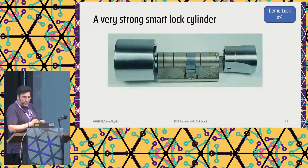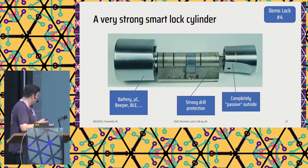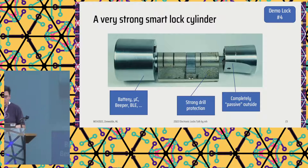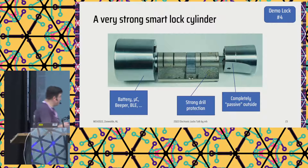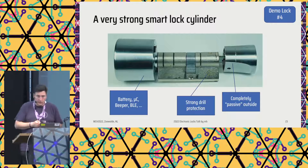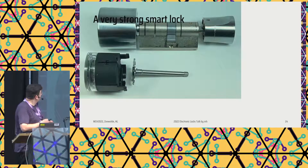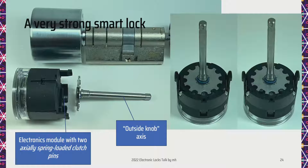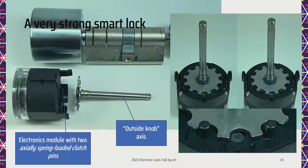Bumping again — another lock. This is a very strong smart lock cylinder. It is designed very well because all the electronics parts are on the inside of the door, with only strong metal on the outside and strong drill protection. You see the SKG three-star sign here — so that is a strong lock. Taking it apart, you can see that there are actually spring-loaded clutch pins. That's the problem, of course. If you look at this knob, you see on the left picture the pins are not engaged, but on the right side they came out. Zooming in — out means coupled, in means not coupled. And that's the problem that we'll see when we bump it.